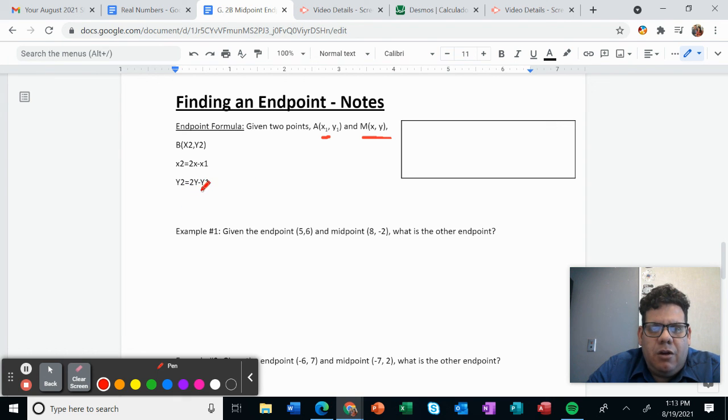And for Y, you do exactly the same. Multiply two times the coordinate of the midpoint, which is right here, and then subtract the value of the coordinate for the first endpoint.